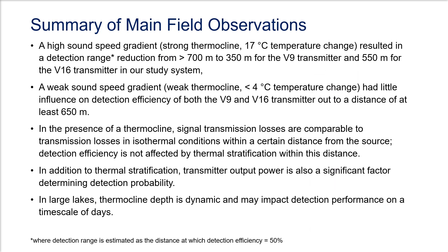From our study, we can summarize a few important points. A high sound speed gradient resulted in a detection range reduction from more than 700 meters to 350 meters for the V9 transmitter and 550 meters for the V16 transmitter. A weak sound speed gradient had little influence on detection efficiency of both transmitters out to at least 650 meters. In the presence of a thermocline, signal transmission losses are comparable to isothermal conditions within a certain distance from the source, and detection efficiency is not affected by thermal stratification within this distance. Transmitter power output is also a significant factor, and in large lakes, thermocline depth is dynamic and may impact detection performance on a time scale of days.